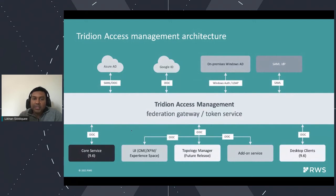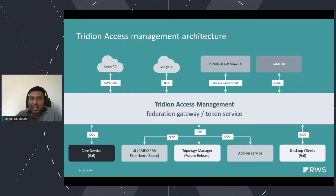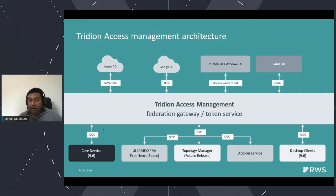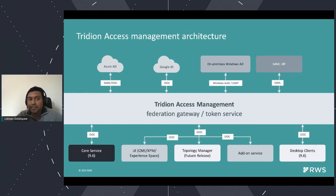The solution is Access Management — technically a federation gateway or token service. A federation gateway authenticates your identity against an external identity provider and transforms that identity claim set into a standard that is the same across all internal services. We are standardizing internally in Tridian on OpenID Connect. That is the only protocol our services will talk. They talk OpenID Connect with Access Management, and Access Management as a federation gateway can then talk different protocols like SAML, OpenID Connect, Windows authentication, and LDAP.